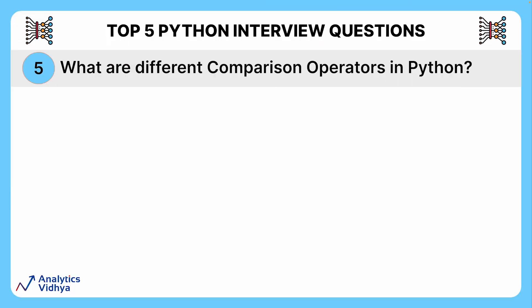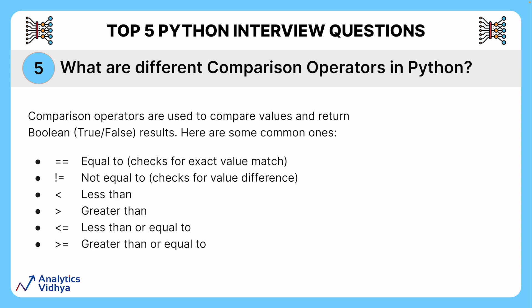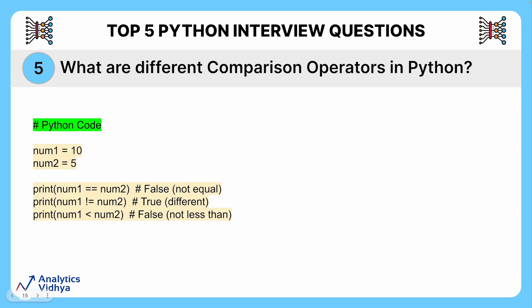The final question is: what are the different comparison operators used in Python? Comparison operators act like judges in your Python code, comparing values and returning verdicts of true or false. They help you make decisions and control the flow of your program. Common comparison operators include: equal to, not equal to, less than, greater than, less than or equal to, and greater than or equal to. Here's a quick exhibit of these operators in action with a Python code snippet.